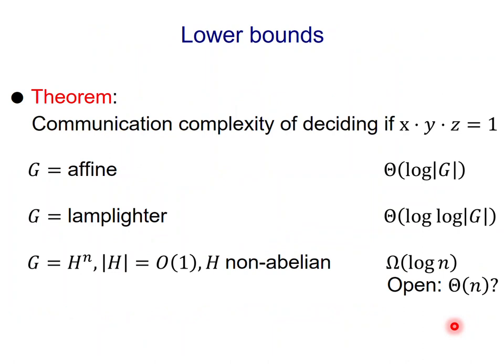A main result in this paper is lower bounds and some upper bounds for the communication complexity of deciding if X times Y times Z is equal to 1 in these groups. If the group is affine, then we get that the communication complexity is theta log the size of the group, with matching lower and upper bounds. If the group is the lamplighter group, we also get matching bounds of the form theta log log the size of the group. If you have a product group H to the N where H is constant and non-abelian, then we prove the communication complexity is at least omega log N, and an open question is whether this bound can be strengthened to theta of N.